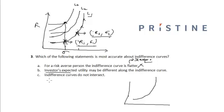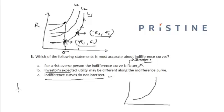The third option says that the indifference curves do not intersect with each other. This statement is correct. Let us try to find the reason why they do not intersect. Suppose we have one indifference curve and we have another indifference curve intersecting it.